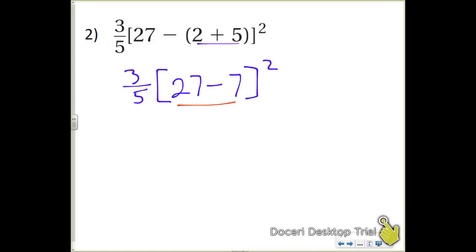Now we still have to do what's inside the innermost brackets. That's 27 minus 7. And that is going to give us 20. And I still have a power 2, so I have to do my power 2 next. So my power 2 is going to give me 400.